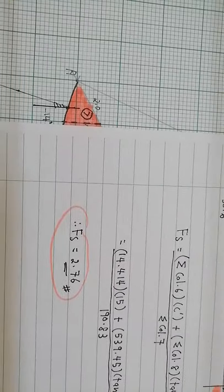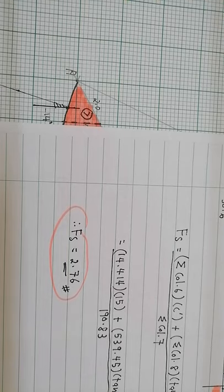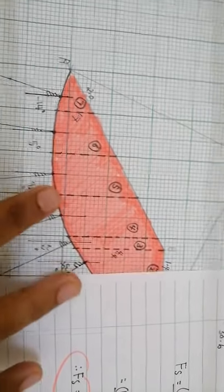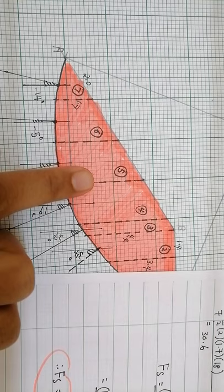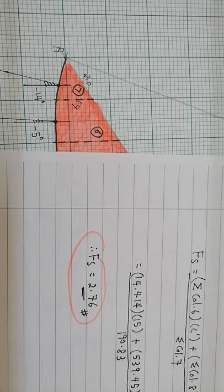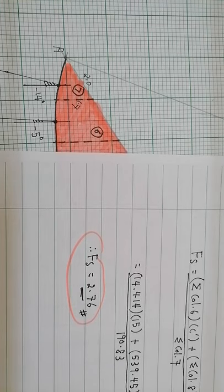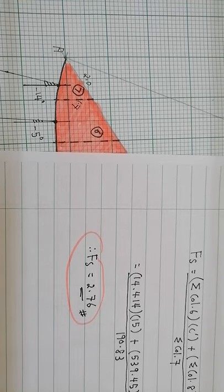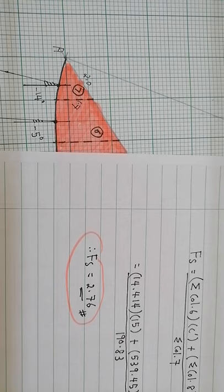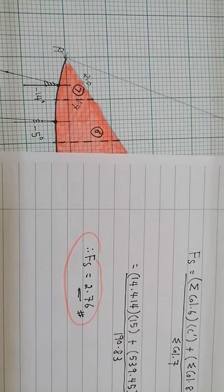That's all from me for this lecture session. To conclude, in this session we learned about the method of slices to check slope stability — menggunakan method of slices — and the factor of safety obtained is 2.76. I hope this lecture session helps you understand this topic better, inshallah. If you have any questions, please let me know. Thank you for your attention, Assalamualaikum and have a nice day.